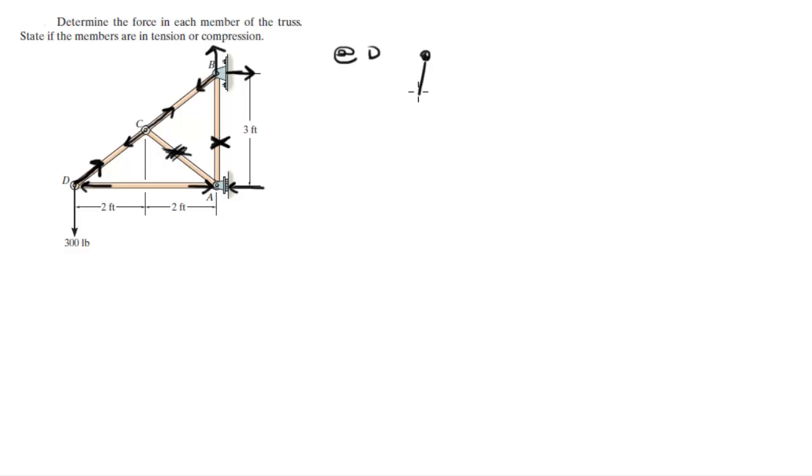At D, we got the 300-pound force going down. We got this force going up, and we need to find this angle. Now, this angle, let's call it phi.